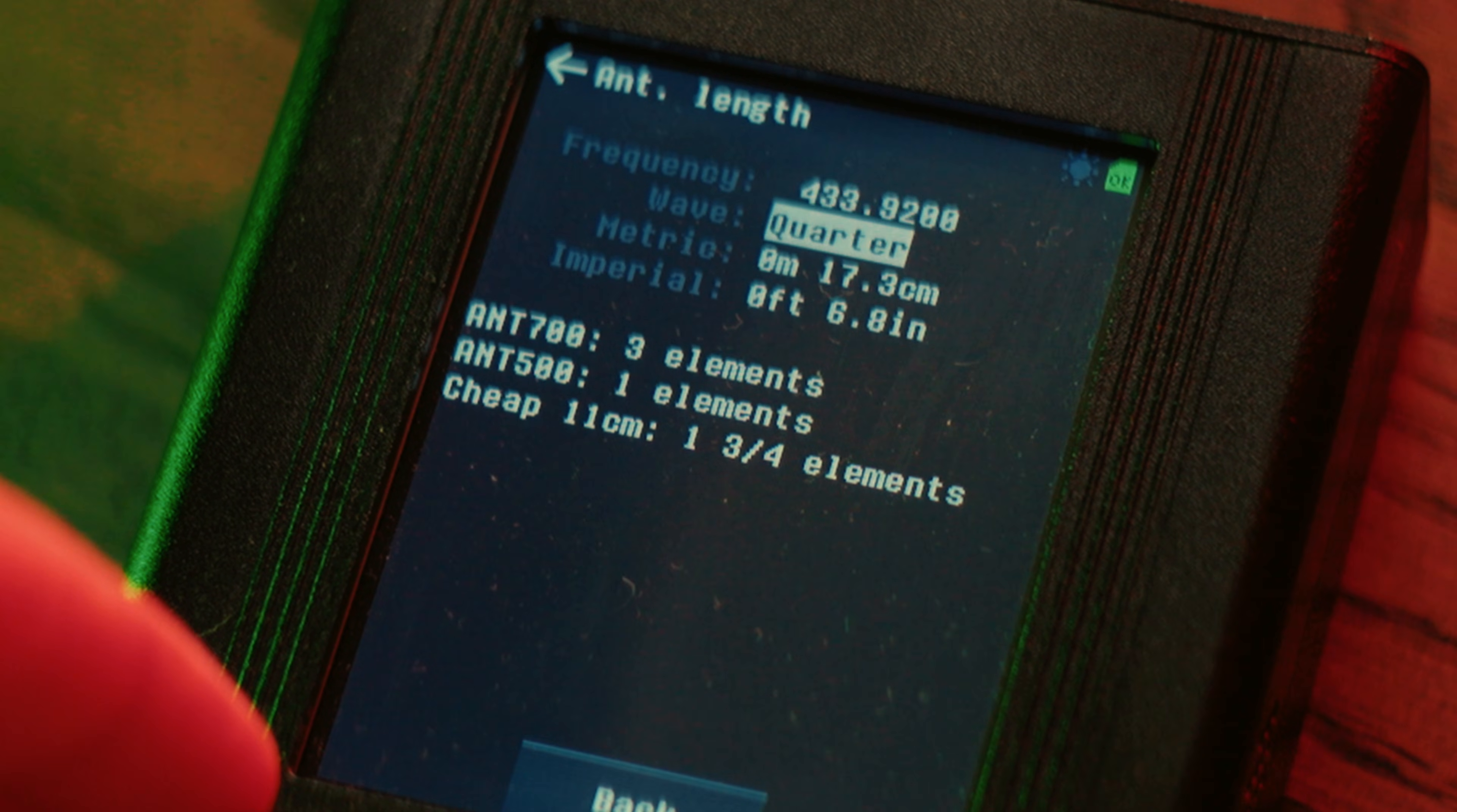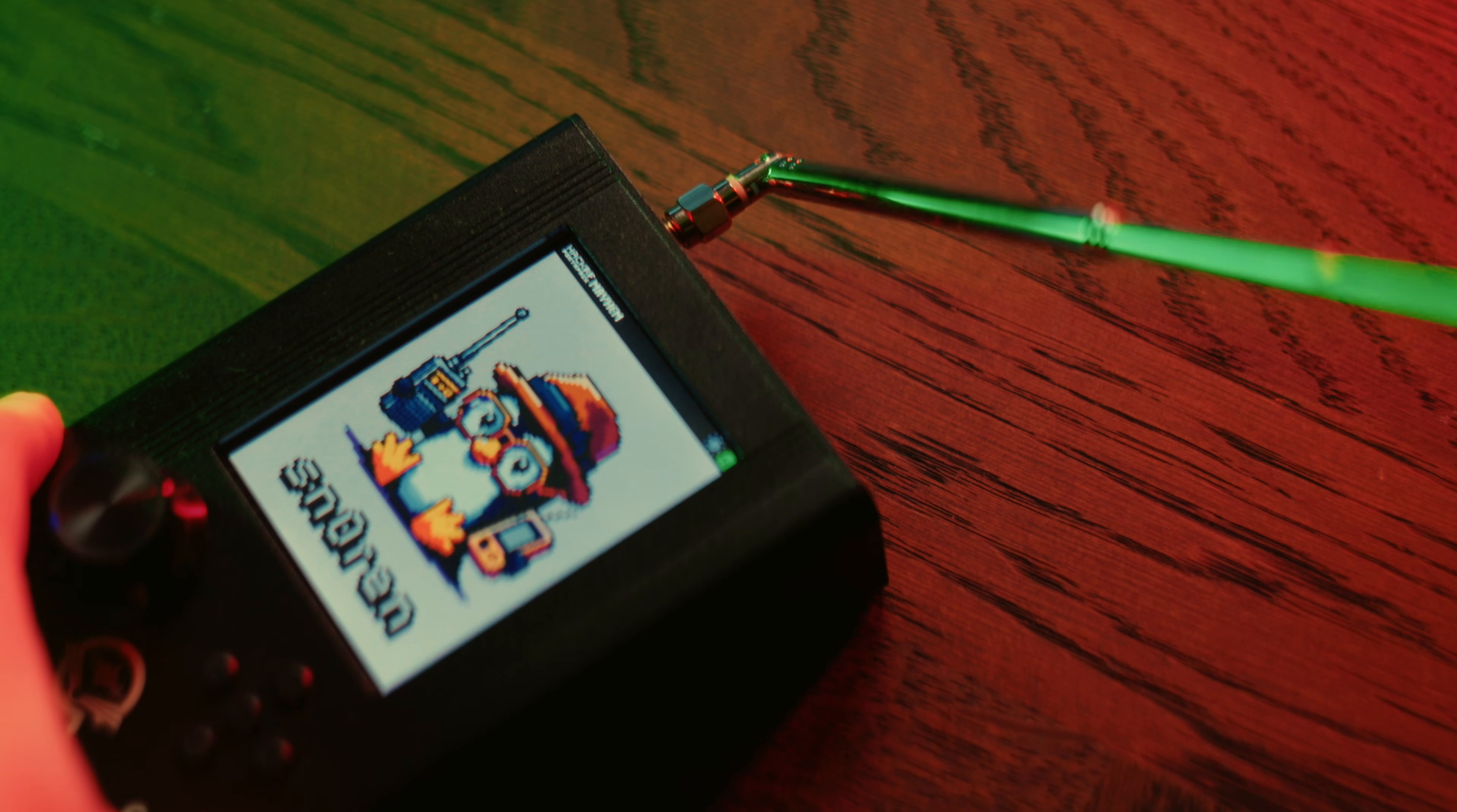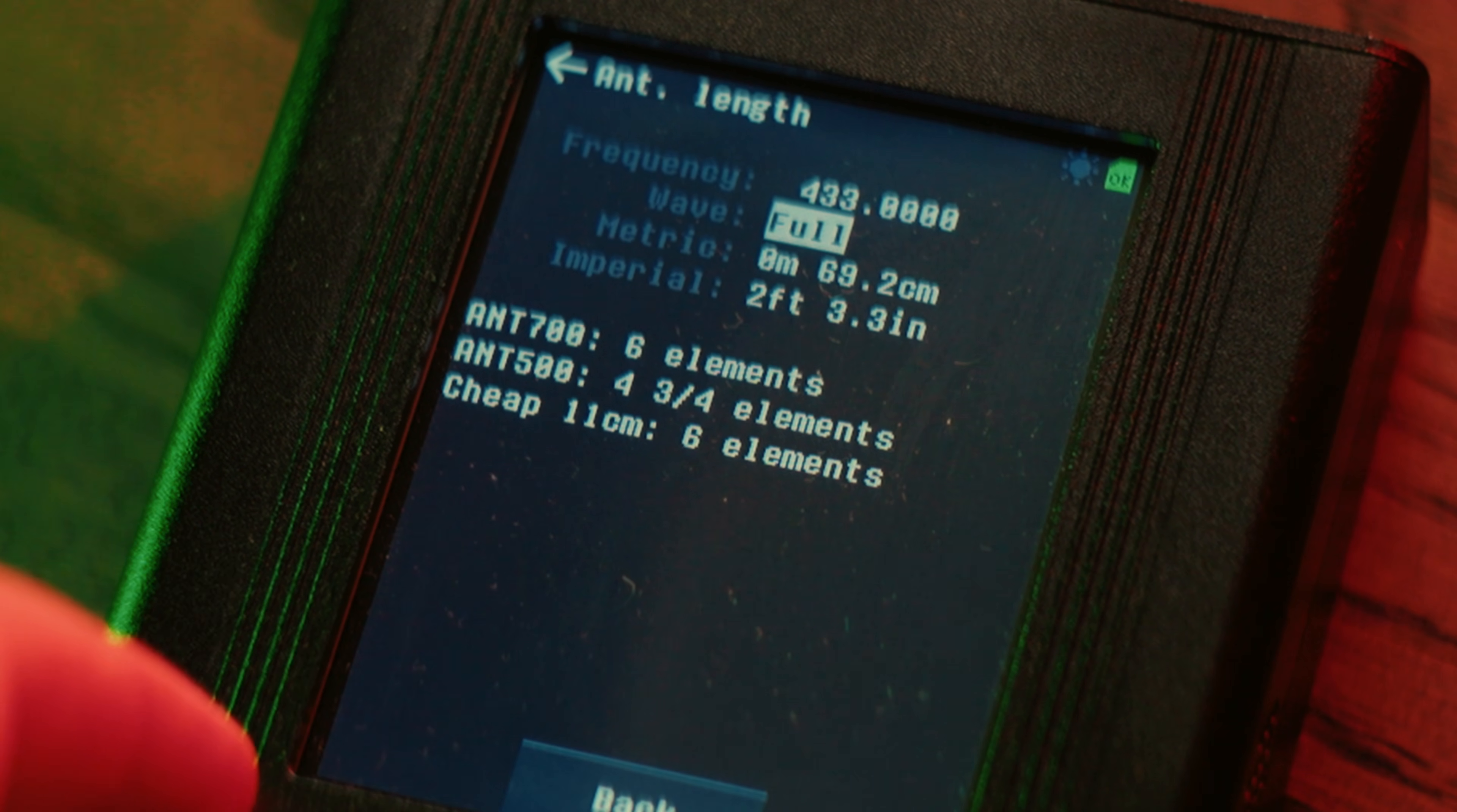Here you can input the frequency and choose half wave to get the dipole length. The antenna calculator on your HackRF also gives you a rough estimation of how much you would need to extend the telescopic antenna. You can also choose other wavelength readouts such as a quarter wavelength, which is useful for ground plane antennas as their primary element is basically half a dipole and thus a quarter wavelength.